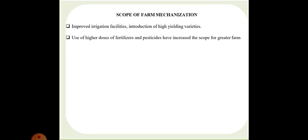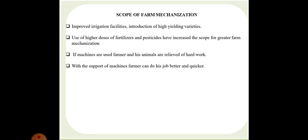Now we will talk about the scope of farm mechanization. Improved irrigation facilities, introduction of high yielding varieties, the use of higher doses of fertilizers and pesticides have increased the scope for greater farm mechanization. If machines are used, farmers and his animals are relieved from hard work. With the support of machines, farmers can do his job better and quicker. He will get more leisure and devote his time to other works.